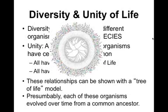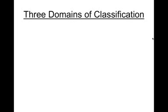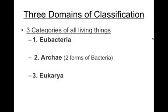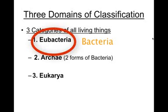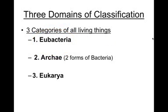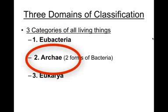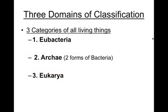All of these species have been organized into three very general categories to help us see their relatedness. The largest group are the eubacteria, otherwise known as just bacteria. They share similar cell structures to another domain called the archibacteria. Both these groups have similar cell structures that lack a nucleus enclosed in a membrane — we call these types of cells prokaryotes.